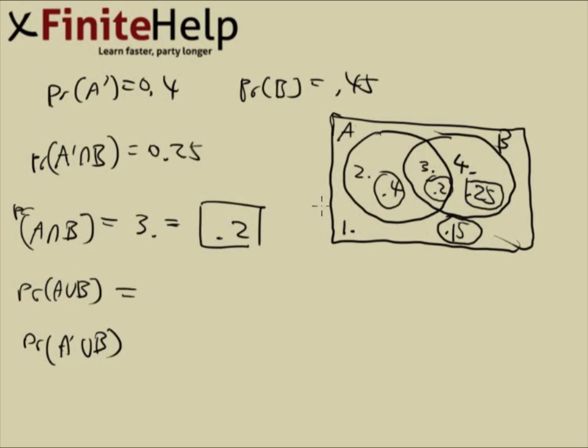A prime union B, that's pretty straightforward too, that's going to be two and three and four. Yeah, I don't mean two plus B plus four, but you know what I mean. And that's going to be 0.85.